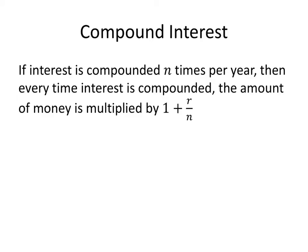Instead of calling it t, we call it 1 over n. So n times per year means that the t value is equal to 1 over n.